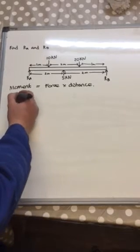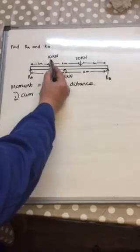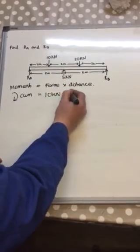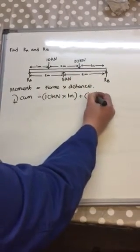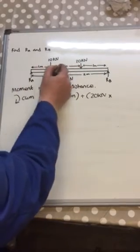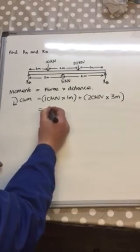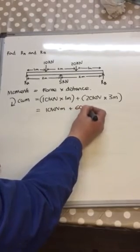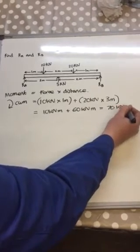If you start by taking clockwise moments, you will have the 10kN force multiplied by 1 meter plus the 20kN force multiplied by the total distance from the fulcrum which is 2 plus 1, which is 3 meters. That then becomes 10kN·m plus 60kN·m which is equal to 70kN·m.